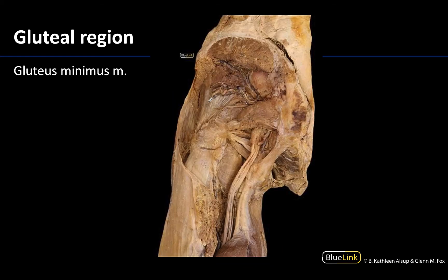In order to see the gluteus minimus, which we are looking at right here, you can see the tendon extending down to the greater trochanter as well. The gluteus minimus is almost directly on the bone, so you have to get quite deep to see it. The piriformis is on a slightly more superficial plane than the gluteus minimus. All this neurovasculature running right on top of the gluteus minimus is the superior gluteal neurovasculature, which supplies both the gluteus medius and minimus, coming superior to the piriformis — whereas the large sciatic nerve and the inferior gluteal neurovasculature traverse inferior to the piriformis.